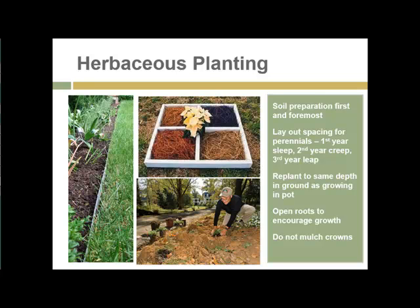Soil preparation is first and foremost for herbaceous plantings. Lay out spacing for perennials recognizing they will grow over time. The first year, the plant is establishing its root system — 'first year sleep.' The second year it begins to spread out. It is really in the third year that the plant reaches its full size and flowering potential. Once established, those root systems are strong and deep, able to withstand cold, drought, and herbivory from insects and other animals.